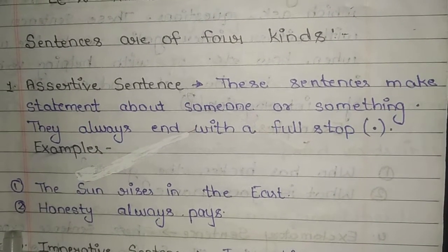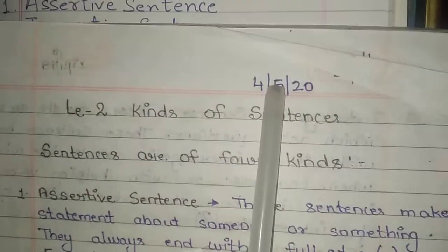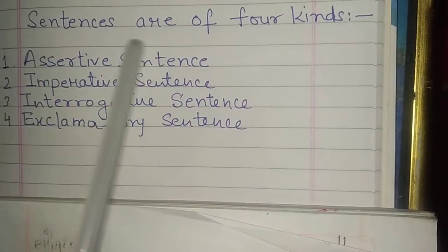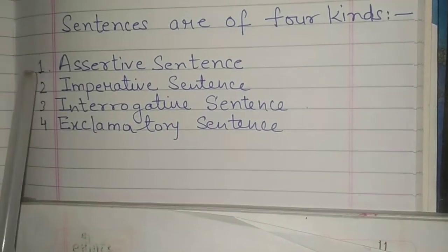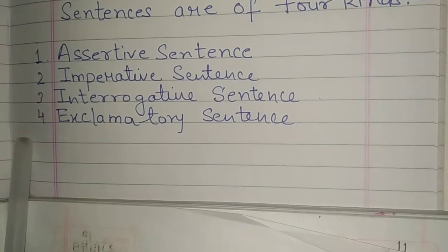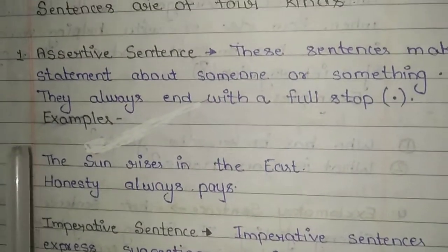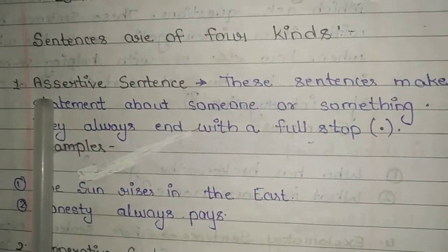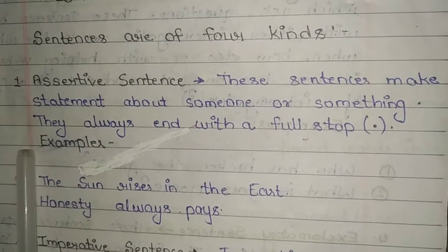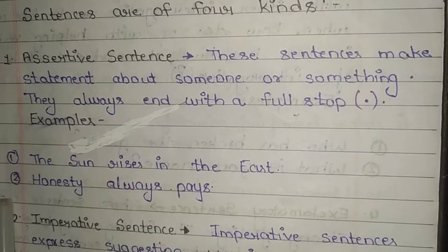Again, first write the date, then 'sentences are of 4 kinds', then name the 4 kinds. After that explain the first definition, that is assertive sentence — write the definition, then write two examples.